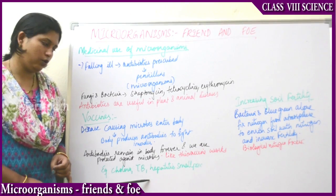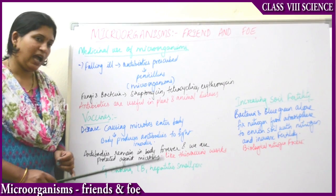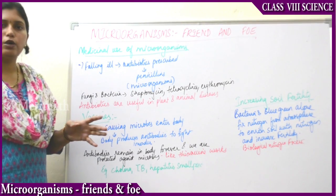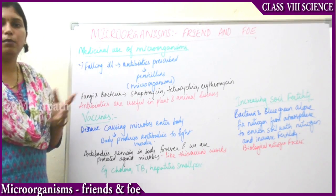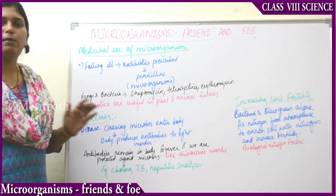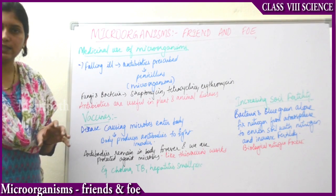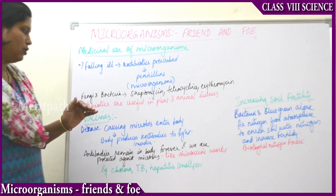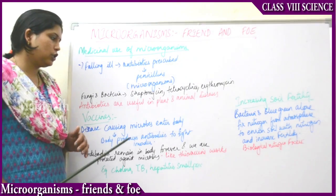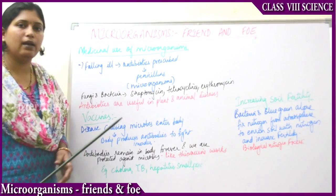Examples include cholera, tuberculosis, hepatitis, and smallpox — all these can be prevented by taking those specific vaccines. That is how vaccines are also helping us.